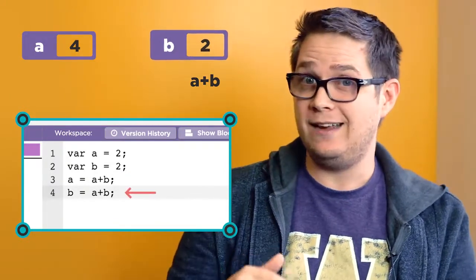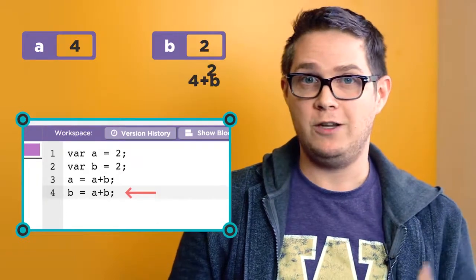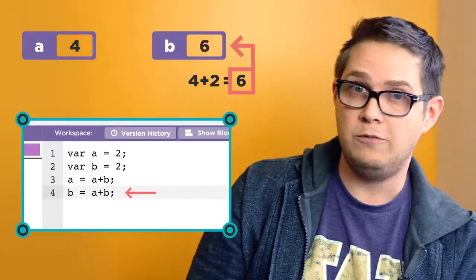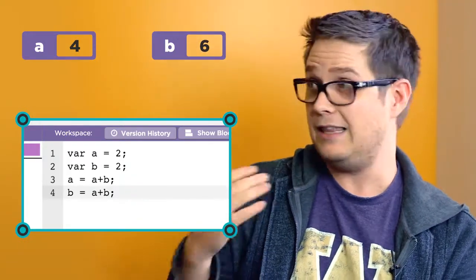With the next line of code, B gets A plus B. The sum of A plus B is now 6. This new number gets stored in the value of B, so the final outcome of the code looks like this.